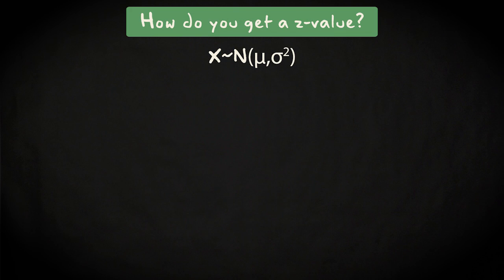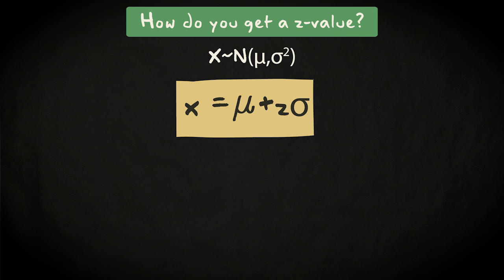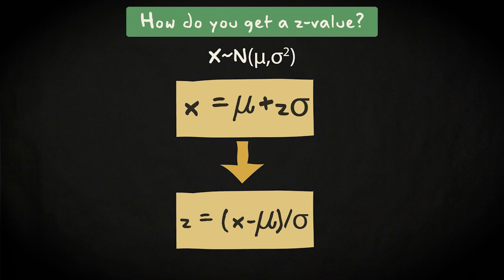But how do you get the Z-value if you're starting off with a normally distributed random variable? For that, you need to consider this relation. A certain value X for the random variable X is Z standard deviations away from the mean. So, if you would like to know the value of Z, based on the values of X, mu, and sigma, it's a matter of rearranging the equation to the following form. This equation tells that the Z-value equals the difference between the value of the random variable and the mean of the probability distribution, divided by the standard deviation.